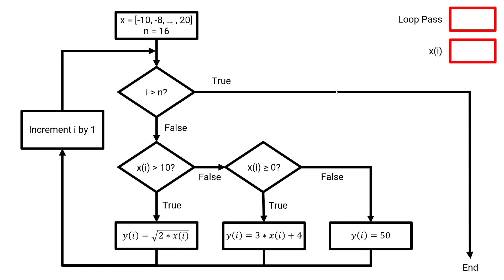Let's take a look at a flowchart to demonstrate each loop pass. We begin by initializing x, our row array, and n, which is equal to the total number of elements inside of x. Next, we check the current value of our loop variable, or our array index, which is equal to 1, and that is not greater than 16 — the total number of elements inside of the array. So that statement is false, and we evaluate x. The first element in our array x is equal to negative 10, and that is not greater than 10, so that is false, and we've checked our first if statement.